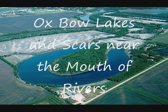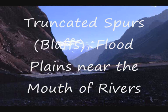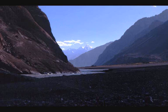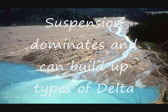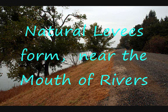Oxbow lakes and scars form near the mouth of rivers. Truncated spurs and flood plains also appear near the mouth. Suspension dominates and can build up types of delta. Natural levees form near the mouth of rivers.